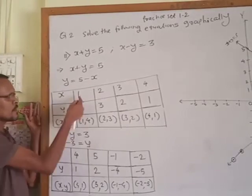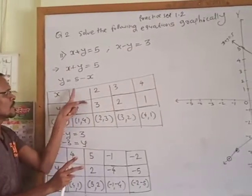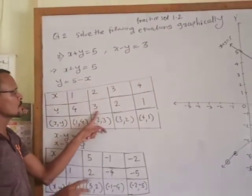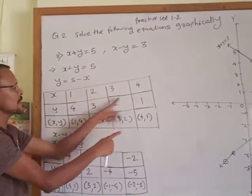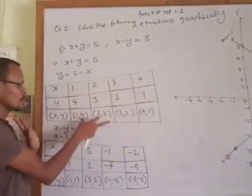x, y. Take any values, we will take 1: 5 minus 1 equals 4. 2: 5 minus 2 equals 3. 3: 5 minus 3 equals 2. 4: equals 1. So these pairs.